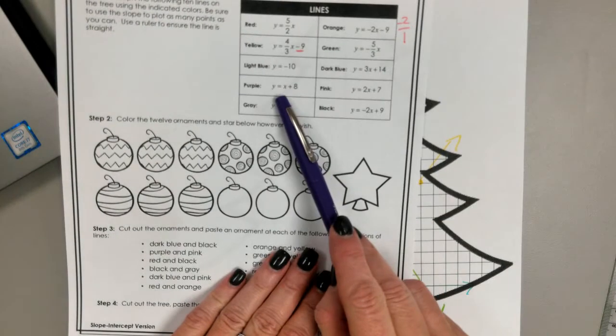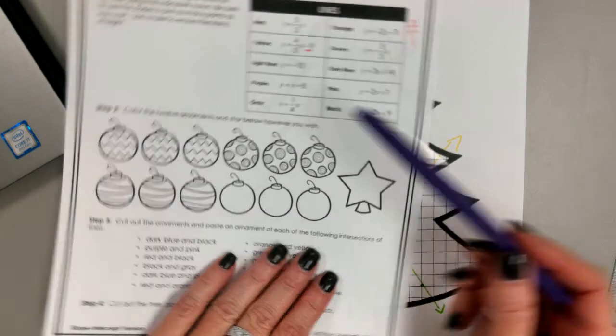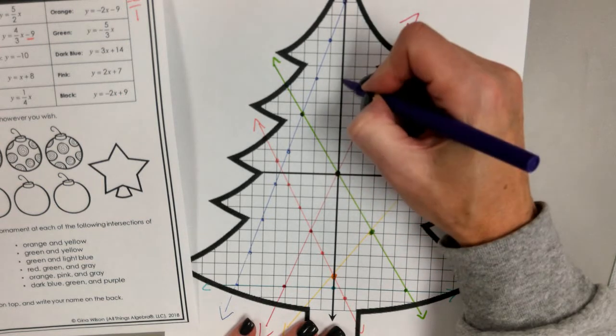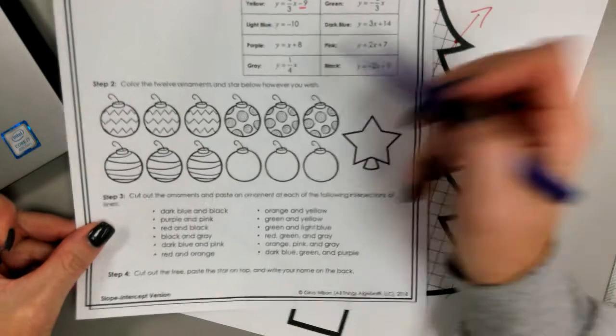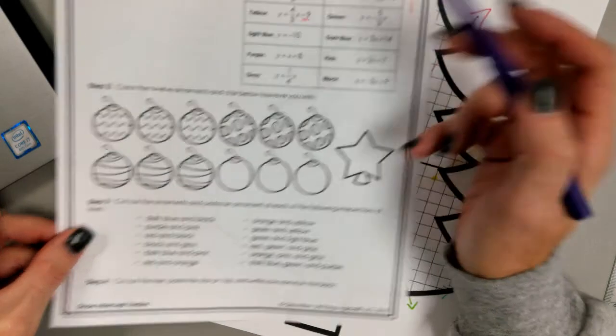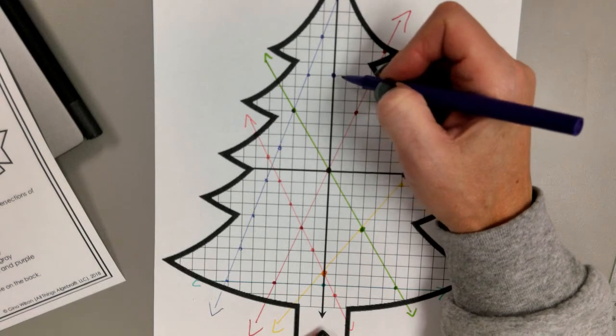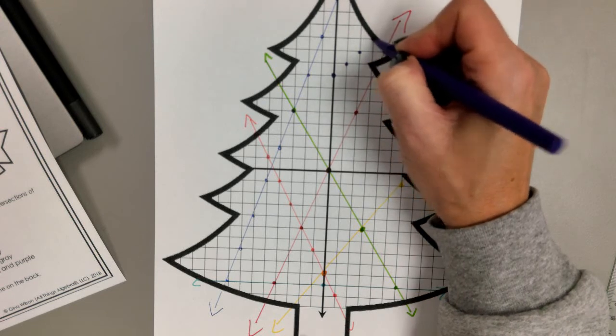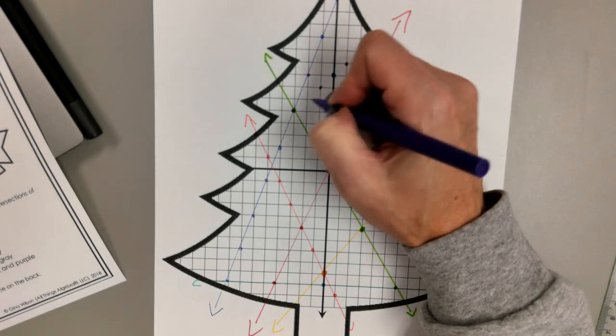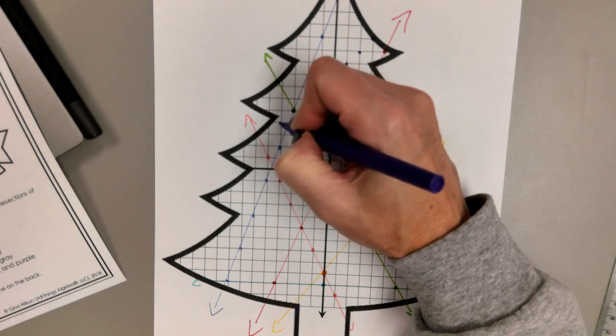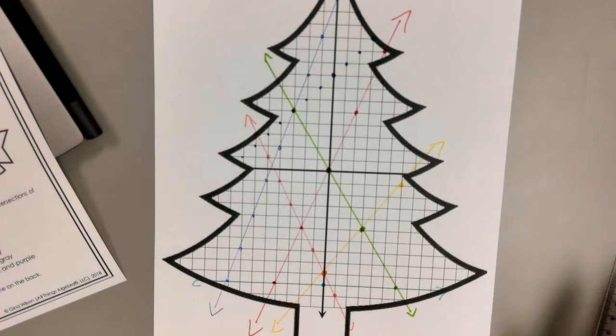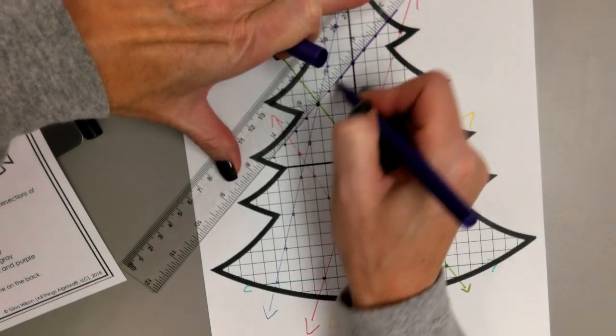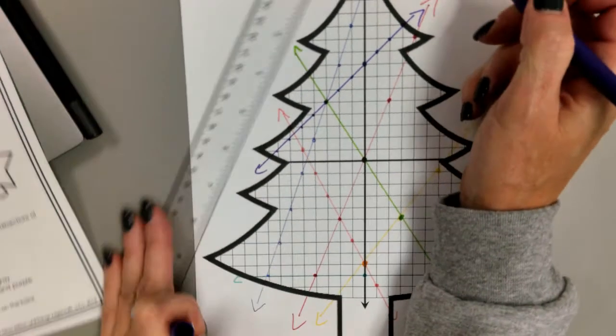All right. Then we had purple. It said y equals x plus 8. So 8 is where we start. And it just said y equals x plus 8, so we know there's an understood one in front of that x, so that means my slope is one. So I'm going up one over one. Remember, it's always two moves: up and over, because we've got rise over run. And then I'm going to back up and find a few more points. So there's my purple line.